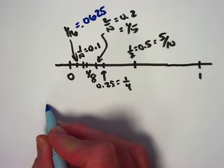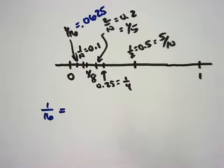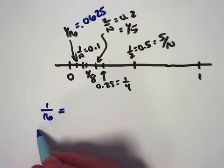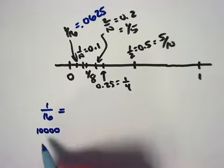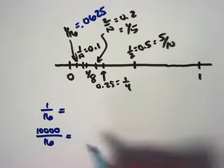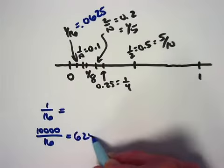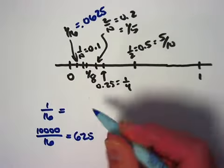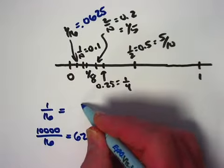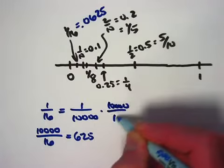Now, how I would justify one-sixteenth being 0.0625 to this point would be to notice that, well this takes a little experimentation, there is a power of ten, in fact ten thousand, that sixteen divides evenly into. It ends up being ten thousand divided by sixteen, you can check this on a calculator, is 625. And because of that, we can think of one-sixteenth as one over ten thousand times ten thousand over sixteen.